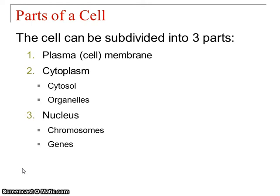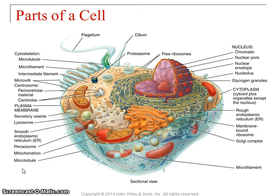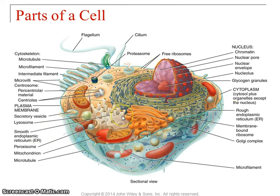When the cell is dividing, the DNA is in that thicker structure called chromosomes. And on those chromosomes, you've got different genes. Each gene codes for a protein. Here's a diagram of the parts of the cells: plasma membrane on the outside, cytosol, organelles, and the nucleus.